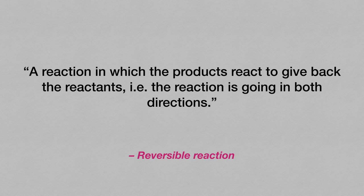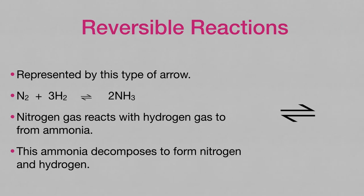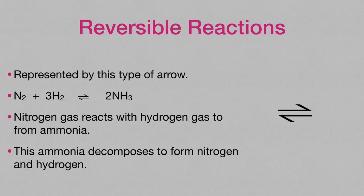A reversible reaction is one in which the products react to give back the reactants, i.e. the reaction is going in both directions. We represent reversible reactions with this kind of arrow. An example is the reaction between nitrogen gas and hydrogen gas to form ammonia. Ammonia under certain conditions decomposes to reform the reactants.